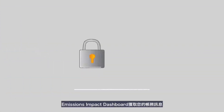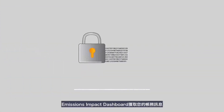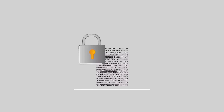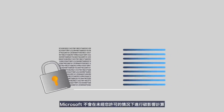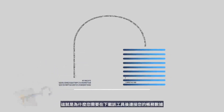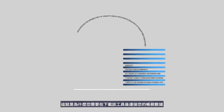The Emissions Impact Dashboard takes your billing information and allocates carbon emissions based on what we know about the carbon impact of our data centers. This is your data, and Microsoft doesn't do the carbon impact calculation without your permission, which is why you'll need to connect your billing data after downloading the tool.